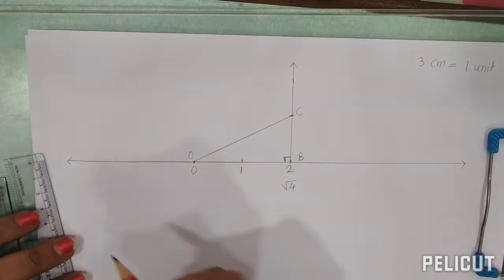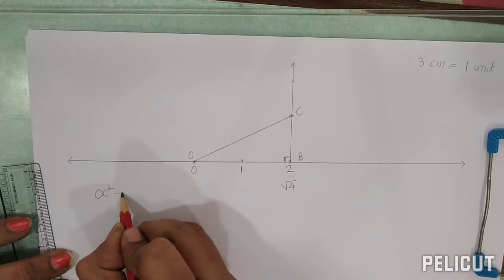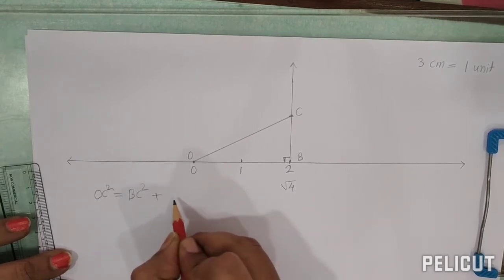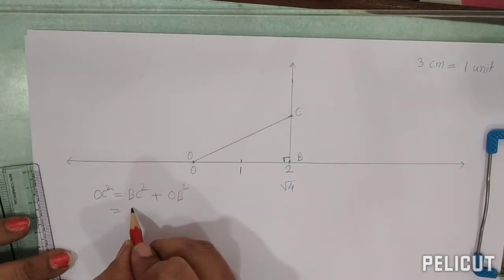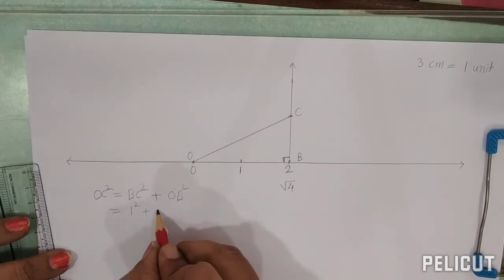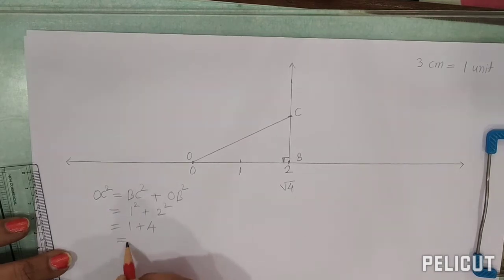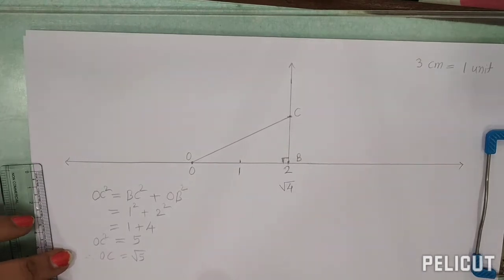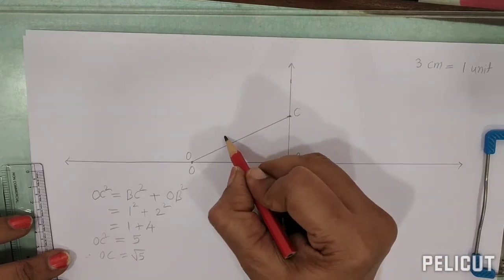By Pythagoras theorem, OC² = BC² + OB² = 1² + 2² = 1 + 4 = 5. Therefore OC² = 5, and taking the square root of both sides, OC = √5. So the distance OC is √5.